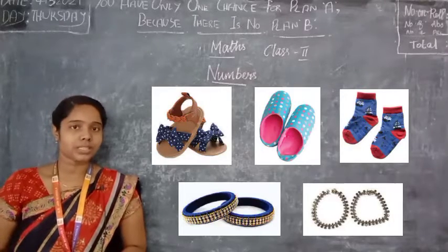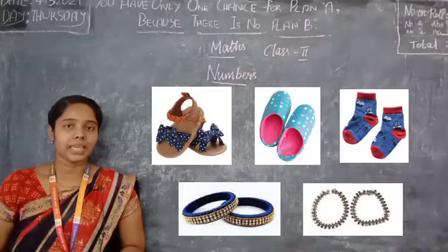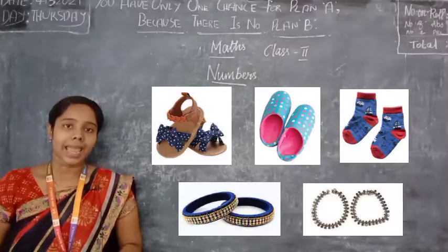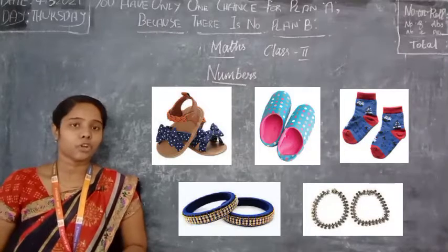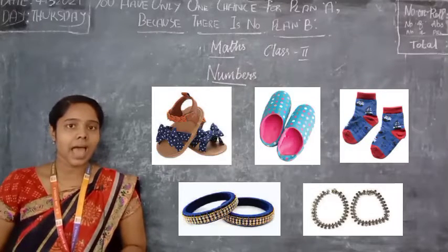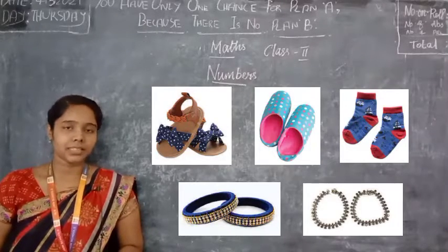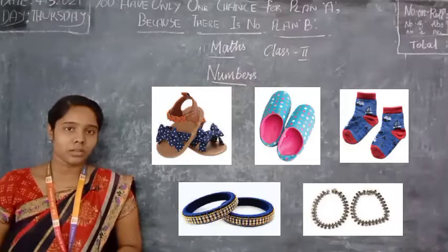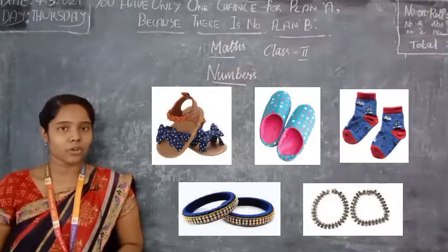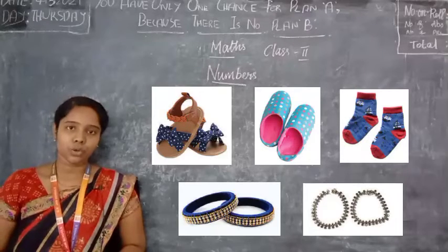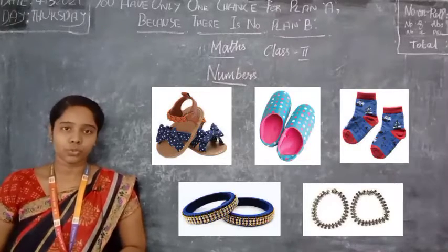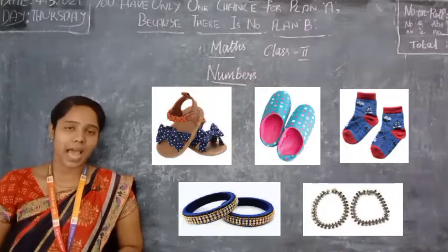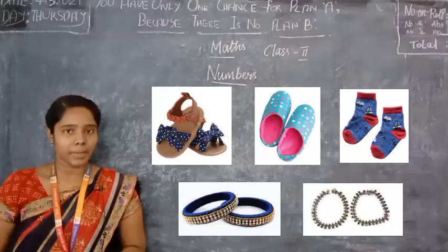A set of two is called a pair — P-A-I-R, pair. Any things which have a set of two are called a pair, and we buy certain things in pairs only. When you go to the shop, you will not ask for one sock — you will ask for a pair of socks. Shoes also we buy two, and for anklets, gloves for our hands, we buy them in pairs only.